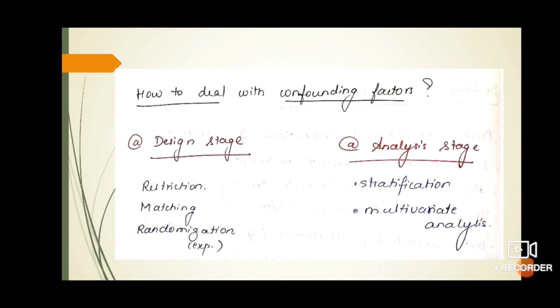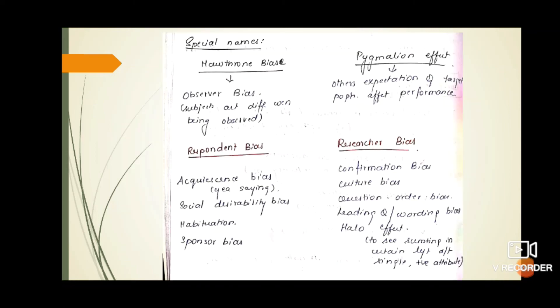There are specially named biases like Hawthorne bias and Pygmalion effect. Hawthorne bias is observer bias where subjects being studied act differently when they know they're being observed. Pygmalion effect is when one person's expectation, the investigator's expectation, will change the performance of the target population. For example, when a teacher expects more from the topper of the class, the student's performance will be different.